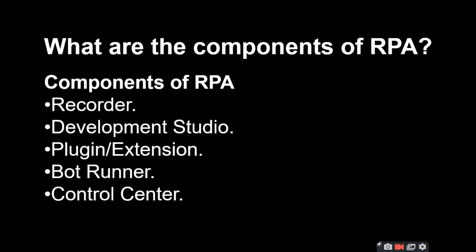What are the components of RPA? The components of RPA are: Recorder, Development Studio, Plugin Extension, Bot Runner, and Control Center. These are the 5 things you need to be able to develop RPA.